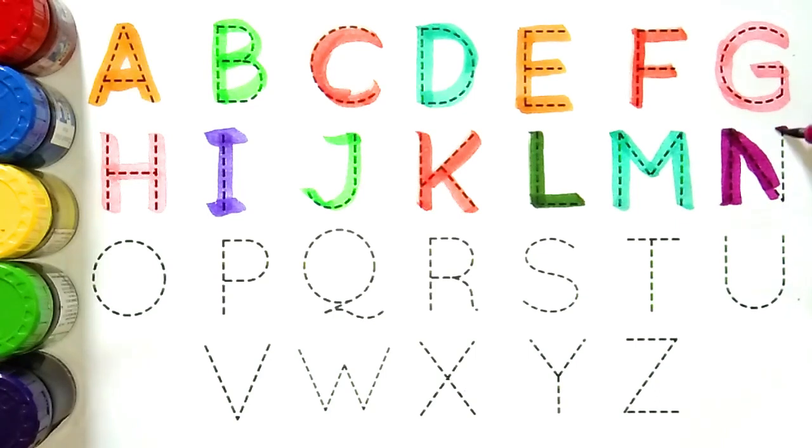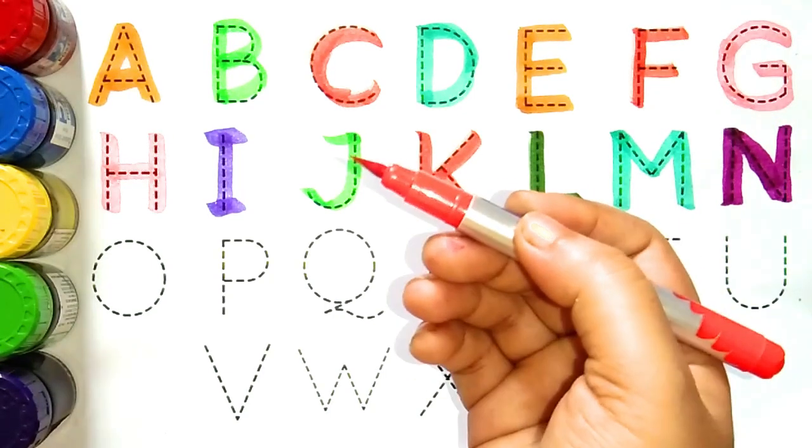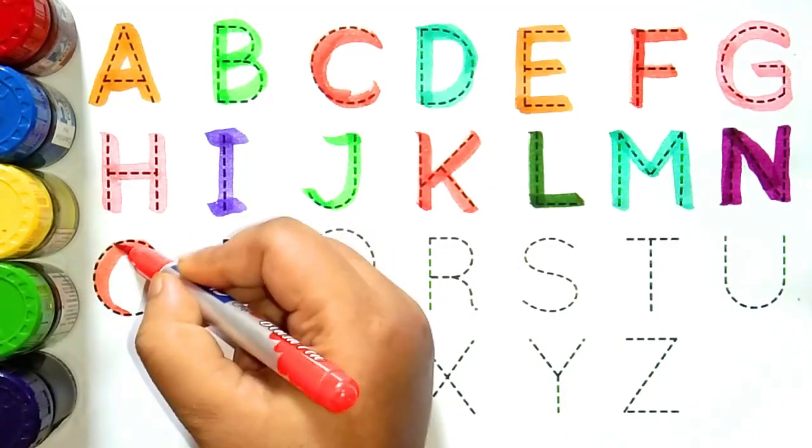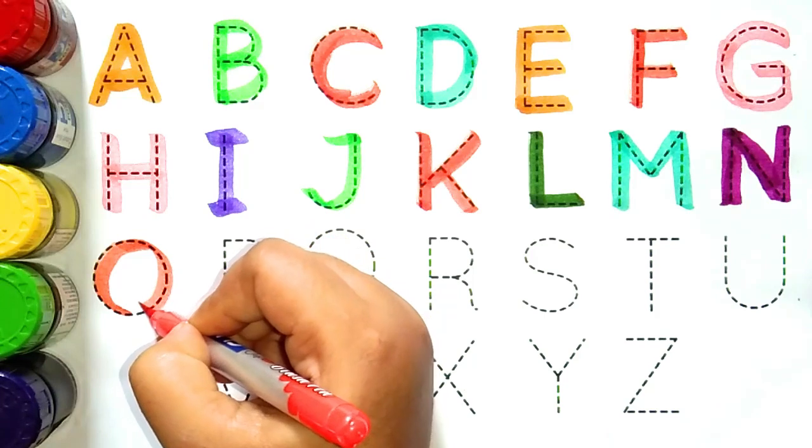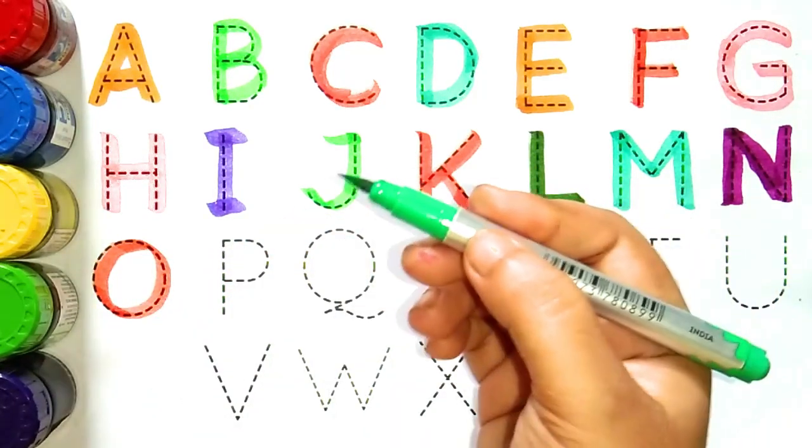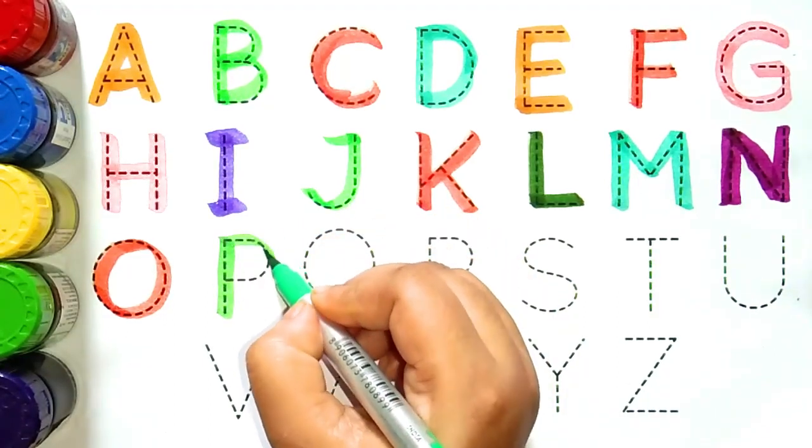Sea green color. M, M for mouse. M for kya hota hay bacho, M for hota hay mouse. Magenta color. N, N for nest. N for kya hota hay bacho, N for hota hay nest. Orange color.